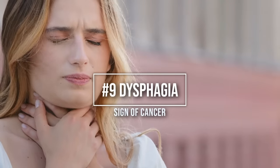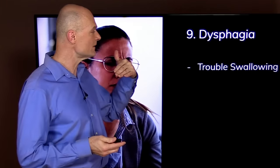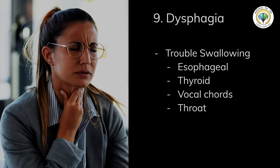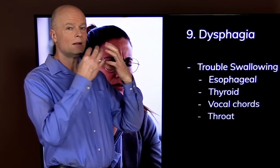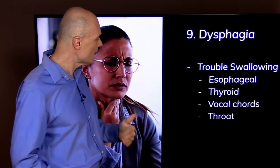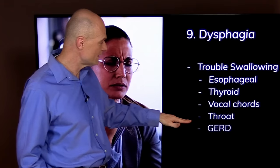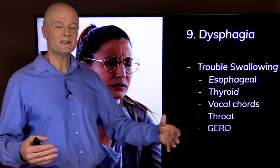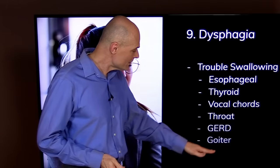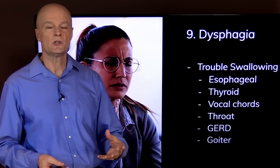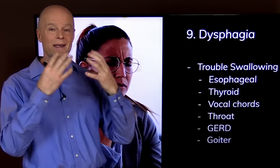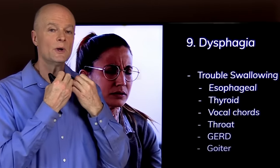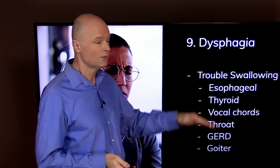Number nine is dysphagia, and that simply means trouble swallowing. If you have trouble with that, it could indicate that you have an esophageal cancer, thyroid, vocal cord, or throat cancer because any of those could grow a lump that makes it more difficult to swallow. However, it's much more common that it is something not so serious like gastroesophageal reflux disease or GERD, which is irritation of the esophagus by acid. It can also be something called a goiter, which is an enlargement of the thyroid gland. It's a benign enlargement in people who are severely deficient in iodine.